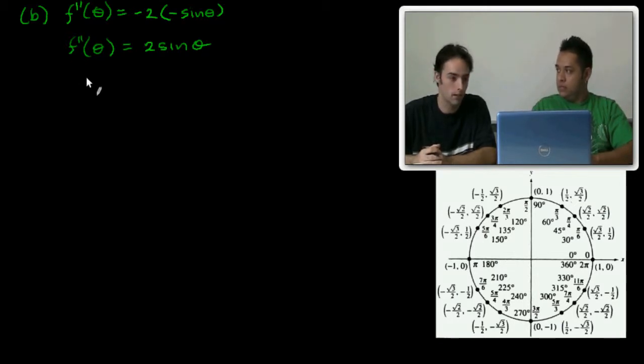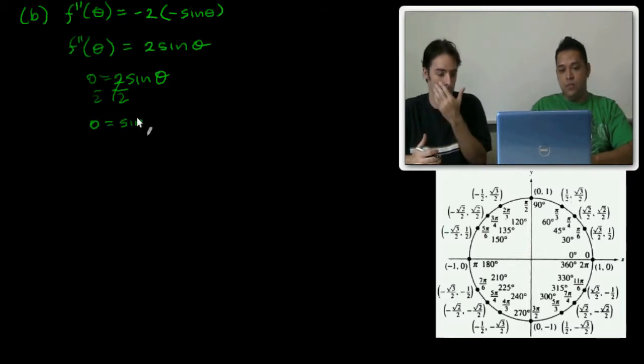Since we're finding the concavity, we need to set the second derivative equal to 0. We'll find those critical points for the second derivative. This one's pretty easy. We just divide both sides by 2. And now we're looking for when sin(θ) = 0.